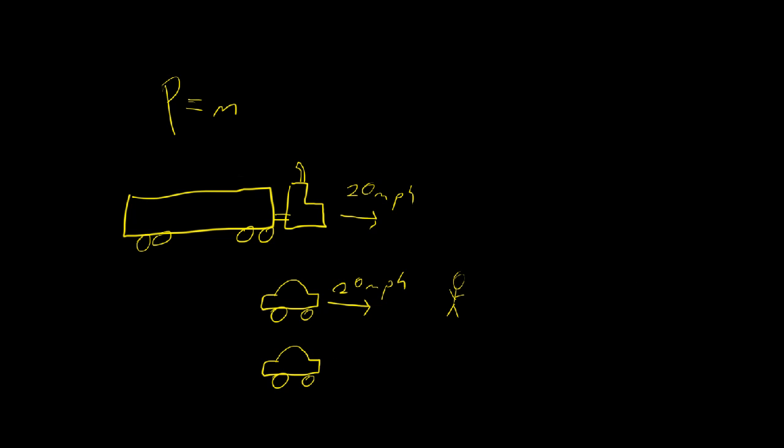So you've got another car. You've got two Volkswagen Beetles coming at you. You're in the middle of the highway. And this one's going 20 miles an hour and this one's going 5 miles an hour.